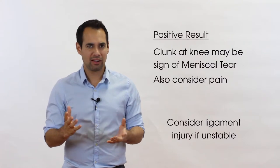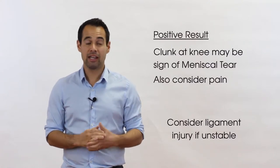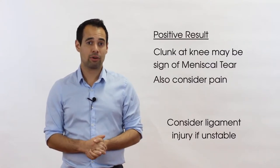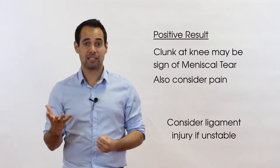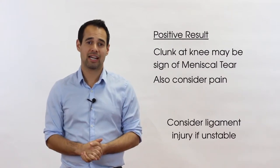If you're kind of thinking, well, there's a clunk there, there's also a little bit of instability, again, you might go back to your specialist and say, I wonder if we need an MRI scan to look at the meniscus, but also to see if our patient has an ACL tear too.